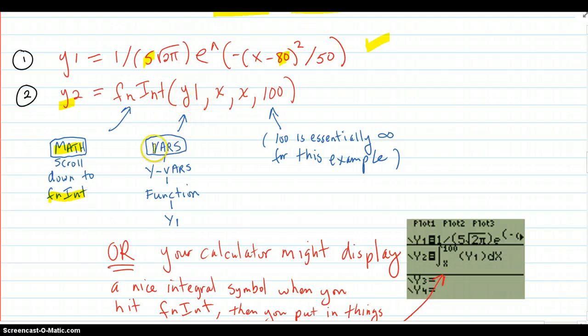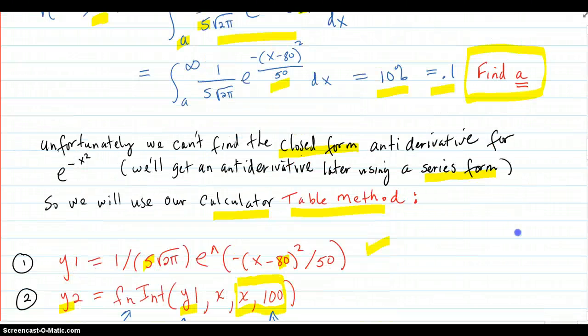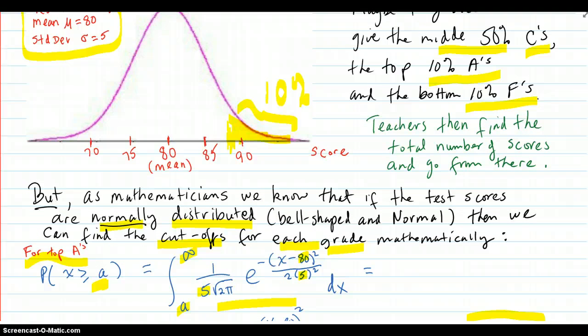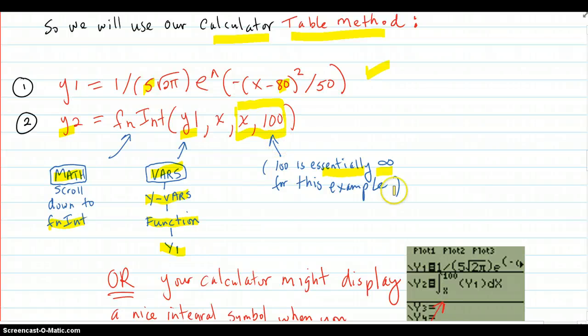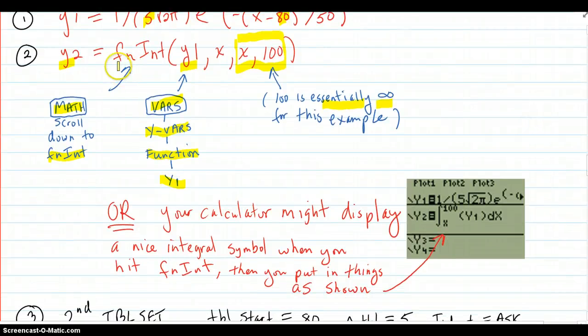Then, how do you get this y1? From vars key. Scroll over to yvars. Then, choose the function. And then, pick off the list y1. And that puts y1 there. Then, you go comma x comma x comma to 100. This part here shows you your range that you're integrating over. Now, the reason why it's 100 is because in this distribution, 100 is essentially infinity. Let's look at that curve again. Here's your curve. See, by the time you get 95 is here. 100 is so far out there, it's very little area. So, we can't put infinity in there. So, we're going to put 100, which is essentially infinity for this example.